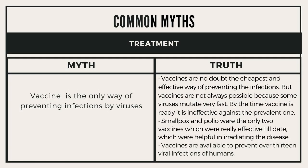Another myth is that vaccine is the only way of preventing infections by viruses. The truth is that vaccines are no doubt the cheapest and most effective way of preventing infections. But vaccines are not always possible because some viruses mutate very fast — by the time a vaccine is ready, it may be ineffective against the prevalent strain. Smallpox and polio vaccines were particularly effective and helped in eradicating those diseases. Vaccines are currently available to prevent over 13 viral infections in humans.